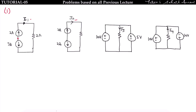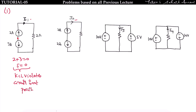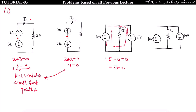If you apply KCL at this point, taking outgoing current as positive, you get minus 2 plus 3 equals 0, meaning 5 equals 0 — KCL is violated and the circuit is not possible. Similarly, applying KCL at another point gives 2 plus 2 equals 0, again violating KCL. Applying KVL in the outer loop gives plus 5 minus 10 equals 0, so minus 5 equals 0 — KVL also violates.